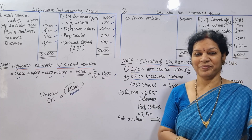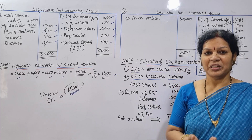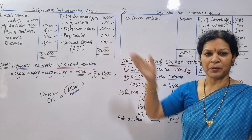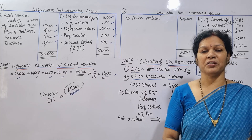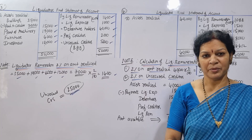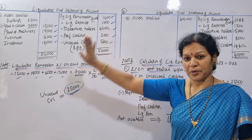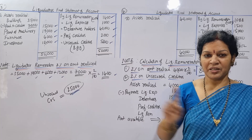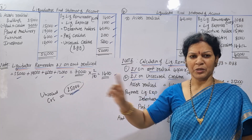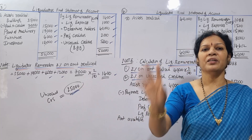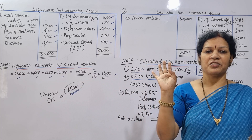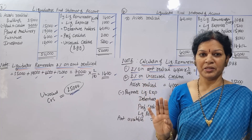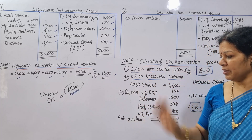Equity shareholders can be seen here. If there is nothing left for unsecured creditors, equity shareholders don't receive anything. The problem is simple: the calculation is 2% on assets realized.